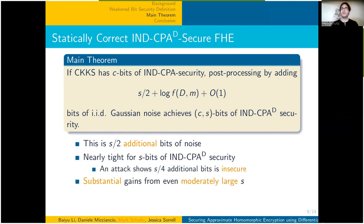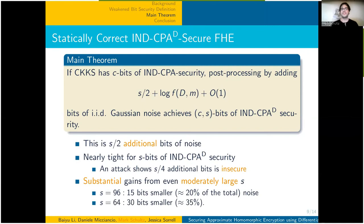By using this weaker C-S-bit security notion, we can obtain substantial gains even for a moderately large S. Concretely, using S equals 96, we can obtain a countermeasure with 15 bits of smaller parameters, which is 20 percent of the total noise. For S equals 64, this becomes 30 bits smaller, which is roughly 35 percent of the total noise.